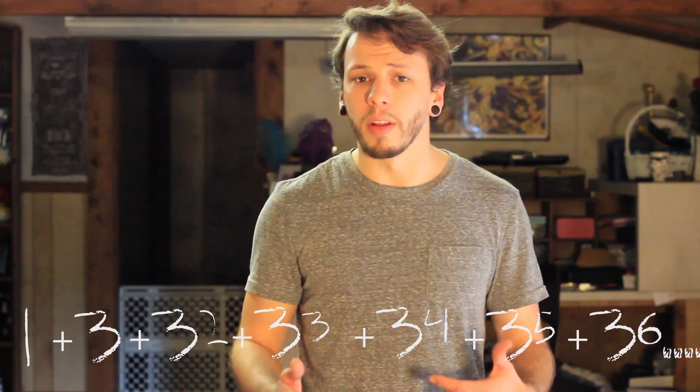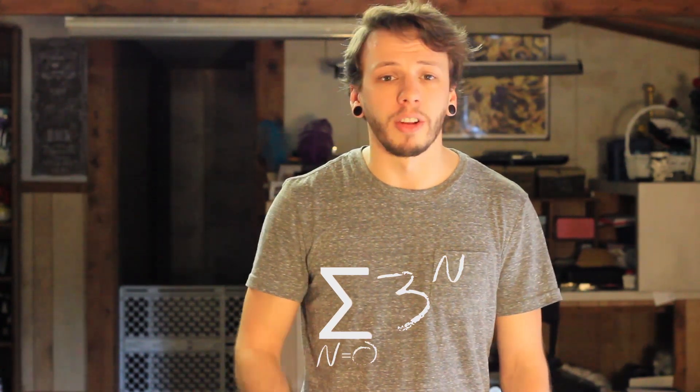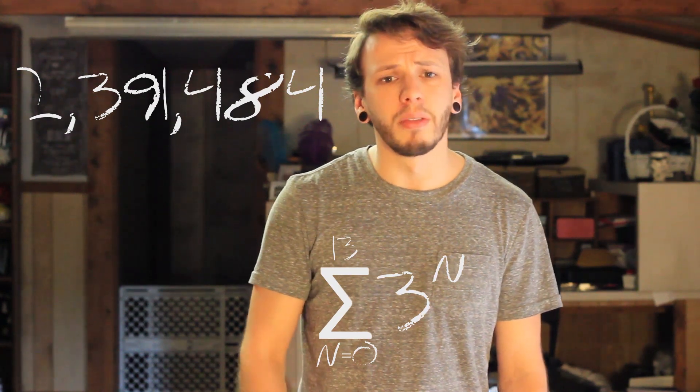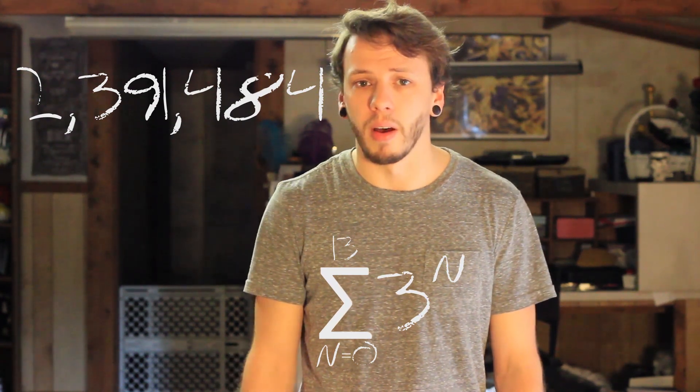We can shrink it into a formula that makes it easier to calculate. The big sigma just means that we're going to add everything together — this is called a summation. So it's 3 to a power, and we write 3 to the n, filling numbers in for that n spot. We start at 0, so below the sigma we write a 0, and then we pick our maximum number on top. Let's do 13. We plug that into our fancy calculator and we get 2.3 million people — that's 300,000 more than our Jerry Lewis-like telethon.